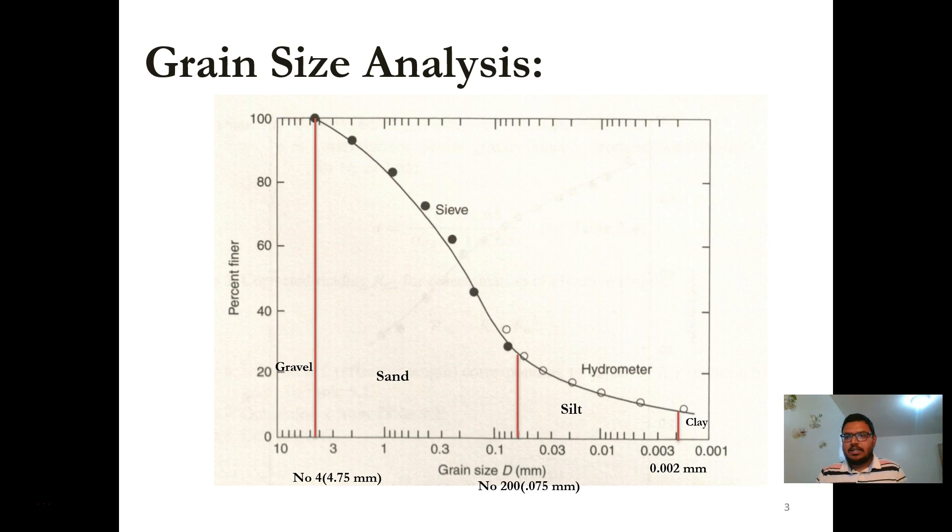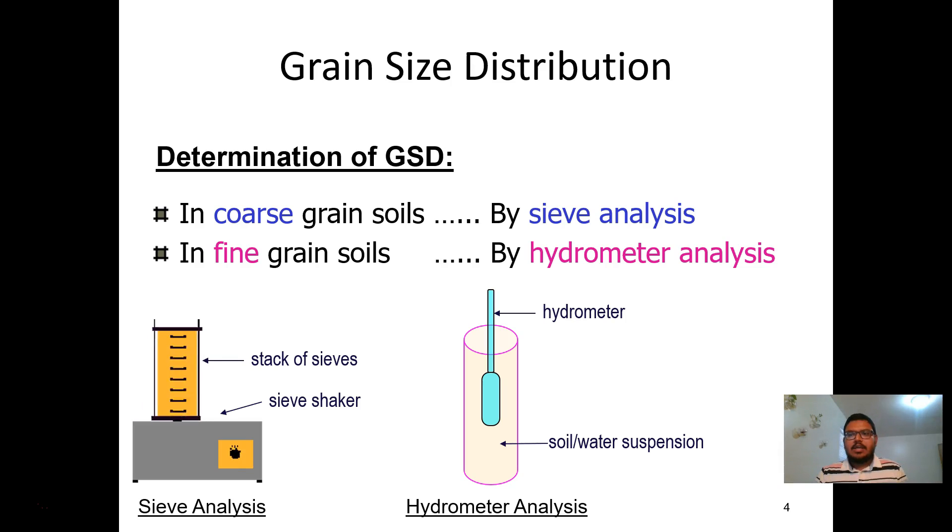If soil is composed of both fine-grained and coarse-grained soil, then we need to conduct both sieve analysis and hydrometer analysis for obtaining combined gradation curve. In coarse-grained soil, we used a sieve shaker, while for fine-grained soil we will use a hydrometer.